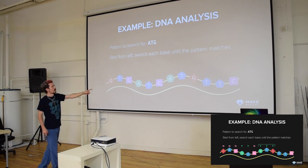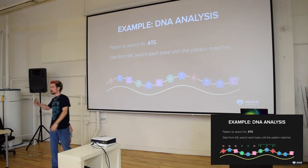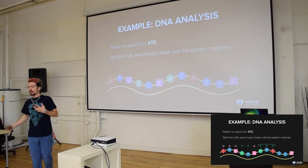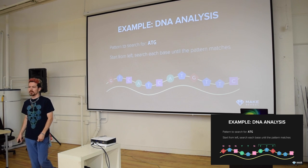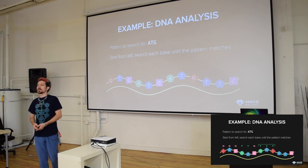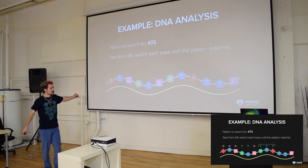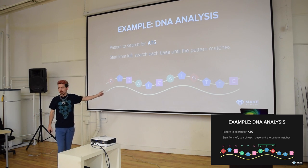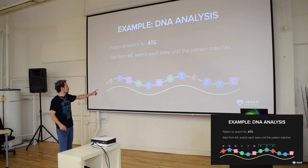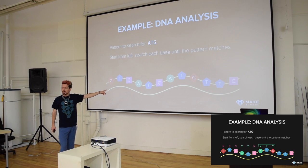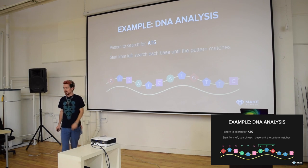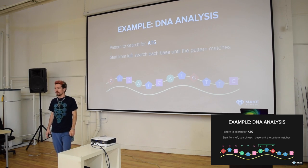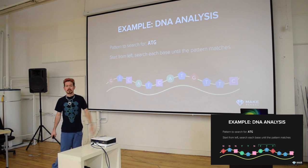How would we find the sequence ATG in a DNA list? Describe an algorithm in English. Leslie said: start from the beginning, search and try to find an A. Once you find an A, see if the next letter is T. If that's true, check if the next letter is G. If we found an A but not a T, we keep going down the sequence.